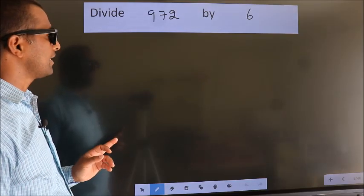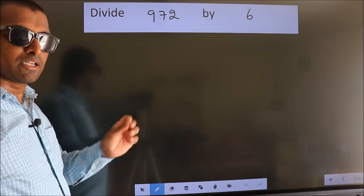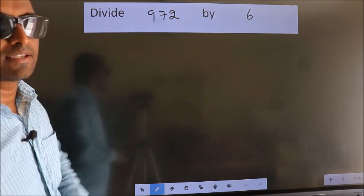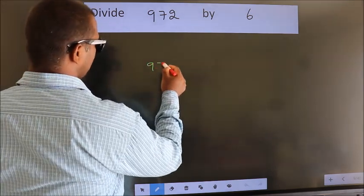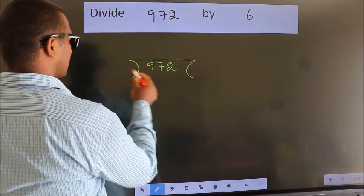Divide 972 by 6. To do this division, we should frame it in this way: 972 here, 6 here.